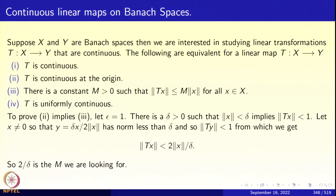Obviously, 4 implies 1 is completely trivial and 1 implies 2 is also completely trivial. What about 3 implies 4? Simply replace X by X minus Y and use linearity. That gives you: norm Tx minus Ty less than or equal to m times norm X minus Y, which immediately confirms that T is uniformly continuous. So 3 implies 4 is also completely trivial.